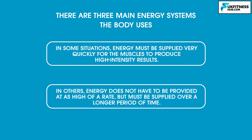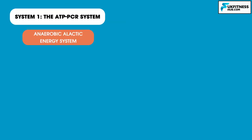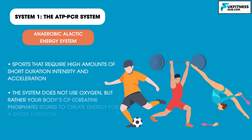System 1: The ATP-PCR system, also known as the anaerobic alactic energy system. Athletes who compete in sports that require high amounts of short duration, intensity, and acceleration will access this energy system. The system does not use oxygen, but rather your body's creatine phosphate stores to create energy for a short duration. Shot putters, weight lifters, football players, gymnasts, sprint distance runners, or any athlete that utilizes explosive movements will utilize this energy system. Training this system through strength and power exercises prolongs the ability to maintain a higher intensity.